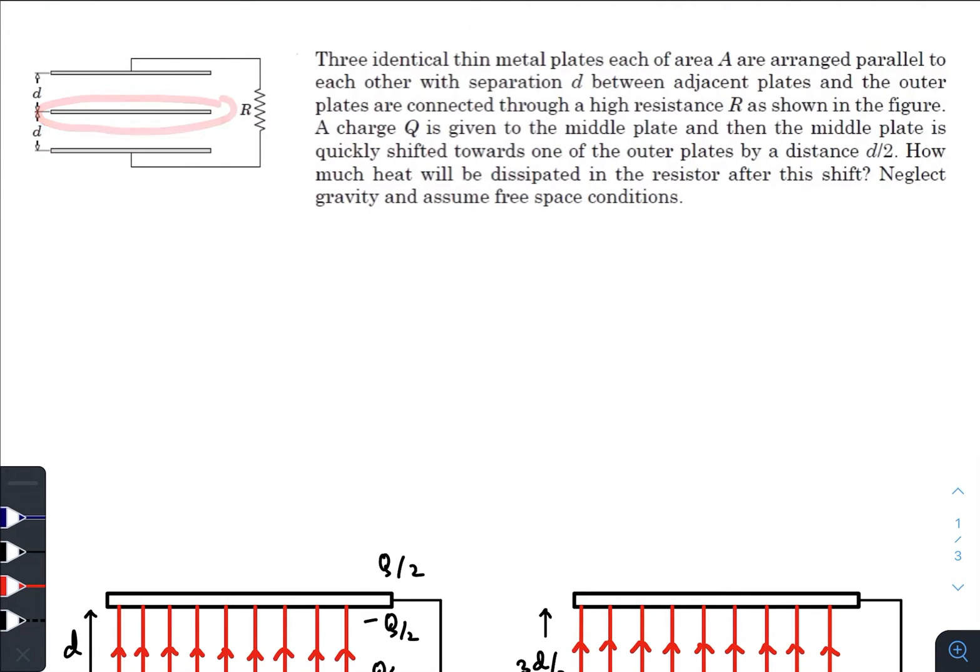Here it was initially Q charge. After supplying Q amount of charge here, the charge will be redistributed. Q by 2 will be on the outer surfaces of both the outer plates. Here it will be minus Q by 2, here it will be Q by 2, Q by 2 minus Q by 2. This is how the charge distribution will take place.